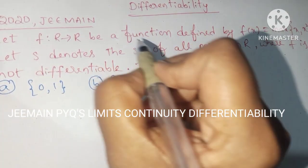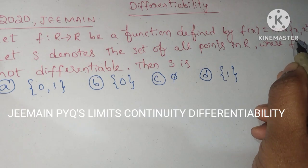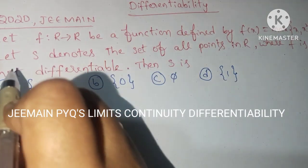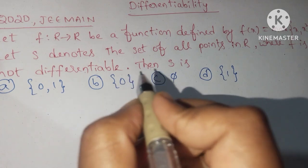Let f maps R to R be a function defined by f(x) equals max of x comma x². Let S denotes the set of all points in R where f is not differentiable. Then S is...